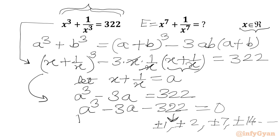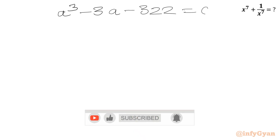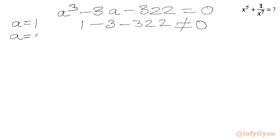The leading coefficient is 1, so the eligible rational roots are ±1. Plugging in a = 1: 1 − 3 − 322 ≠ 0. Plugging in a = −1 also won't satisfy. Plugging in a = 2: 8 − 6 − 322 ≠ 0. Plugging in a = −2 won't satisfy either since 322 is a large number.